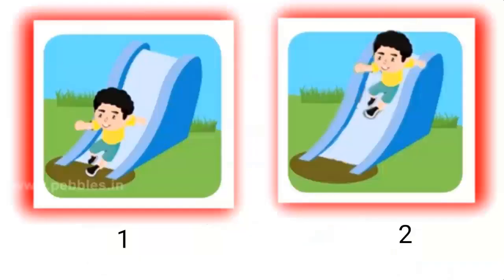In the next picture, there are two boys playing on a slide — two pictures. In the first picture, the first boy is at the bottom of the slide because his position is towards the down side. In the second picture, the second boy is on the top of the slide. So the first picture shows the boy is at the bottom of the slide, and the second picture shows the boy is at the top of the slide.